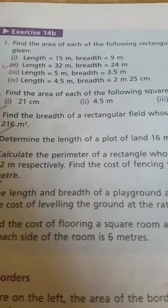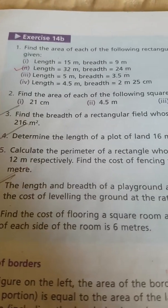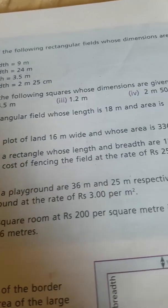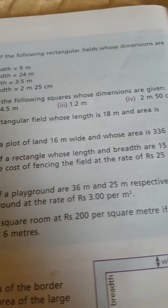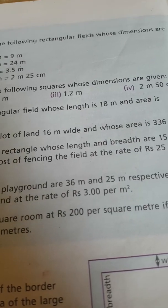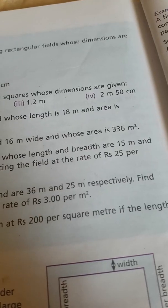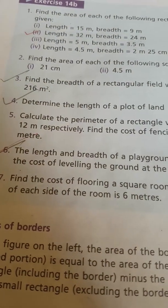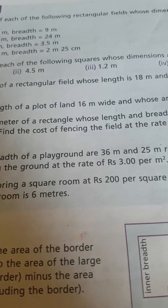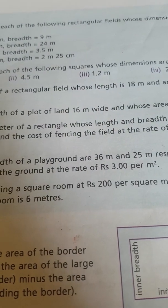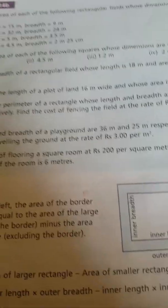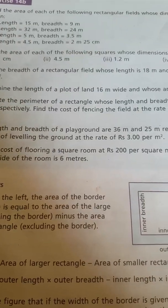Now we come to the sixth question. The length and breadth of a playground are 36 meters and 25 meters respectively. We need to find the cost of leveling the ground at the rate of rupees 3 per meter square. Leveling the ground means you have to find the area first.